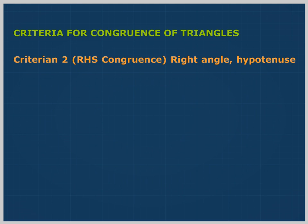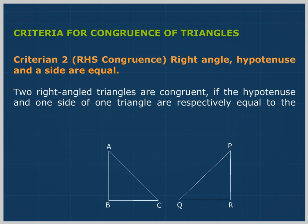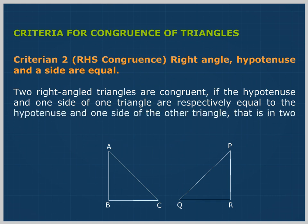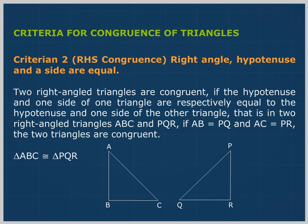Criterion 2: RHS Congruence — right angle, hypotenuse, and a side are equal. Two right-angled triangles are congruent if the hypotenuse and one side of one triangle are equal to the corresponding hypotenuse and one side of the other triangle. That is, in two right-angled triangles ABC and PQR, if AB equals PQ and AC equals PR, then triangle ABC is congruent to triangle PQR.